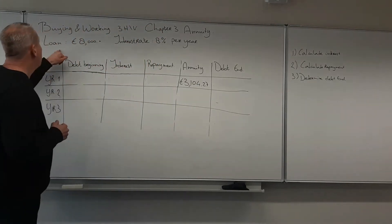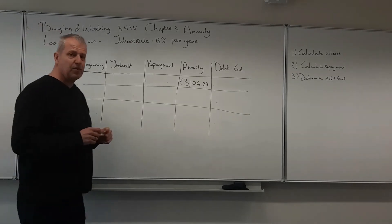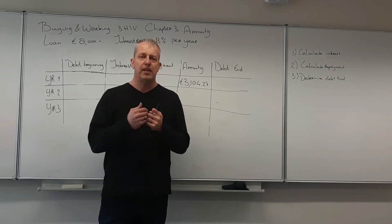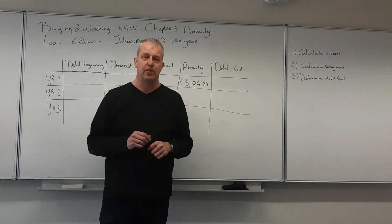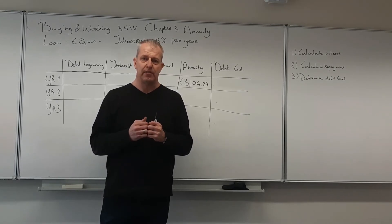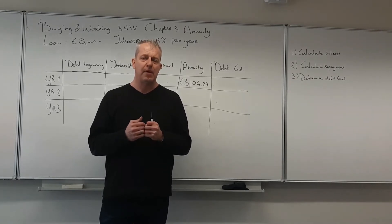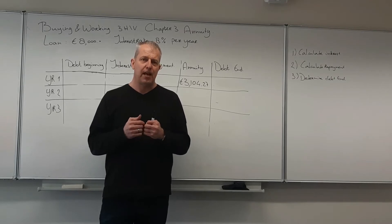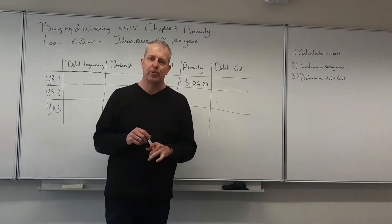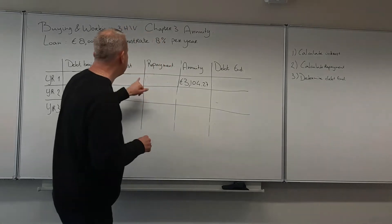An annuity loan is a special kind of loan because in this loan you pay both interest and repayment. What makes it special is that those two added up is always the same amount every year. So you pay the bank a certain amount — the annuity — every period, and that is always the same. It consists of both interest and repayment of the loan. I'm going to show you how to fill in this table.